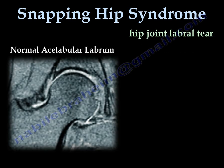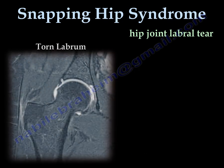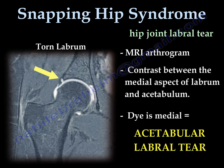The labrum is a black triangular structure. Lateral to it, you find the lateral recess — the dye can go there and it is normal, it is not a tear. When the dye is medial to that black triangular structure, then it is a tear.